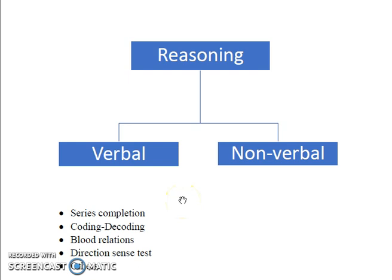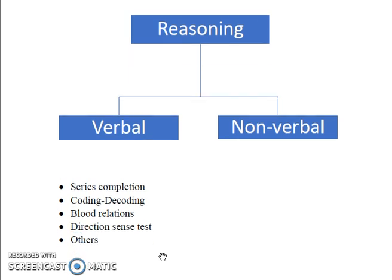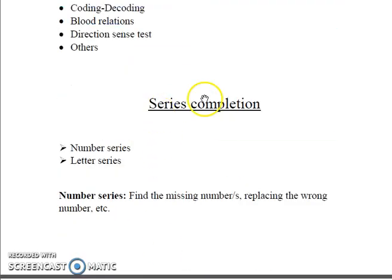From NET exam perspective, the following verbal and non-verbal reasoning including series completion, coding-decoding, blood relations, direction sense test and others such as Venn diagram, analogical relationships, etc. are quite important. So in this video, we are going to start with the series completion portion and understand it with the help of examples.